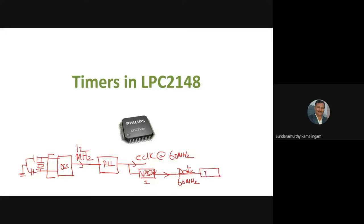This 60 MHz clock is then divided by a register called the pre-scalar register (PR). The pre-scalar register divides this 60 MHz clock by a suitable factor — it is a 32-bit register. You can divide this 60 MHz into any desirable clock frequency, which is actually going to your timer.